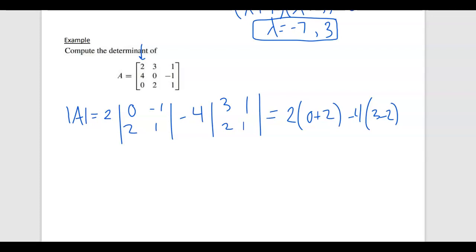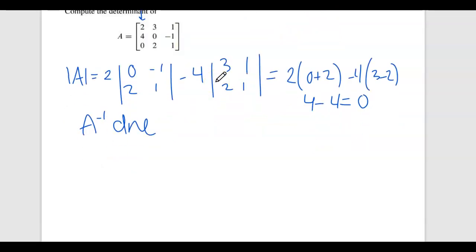Now, notice this ends up giving you 4 minus 4, which is 0. So if we remind ourselves what that means, the determinant of A being 0 means that it's not invertible. A inverse does not exist. Well, let's go ahead and find the eigenvalues just to practice of this matrix here. So we'll put 2 minus lambda, 0 minus lambda, and 1 minus lambda on the diagonal, and I want to figure out when this is 0.